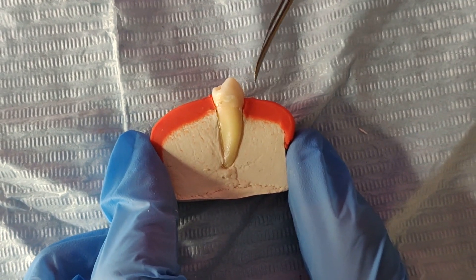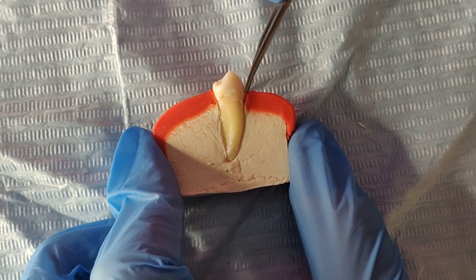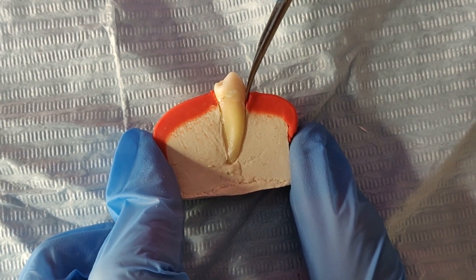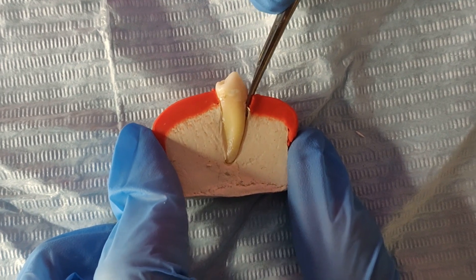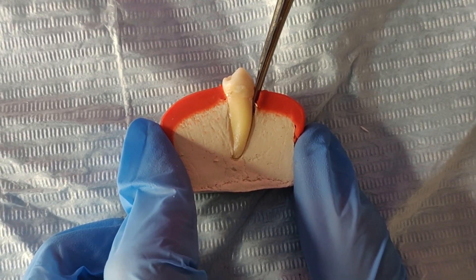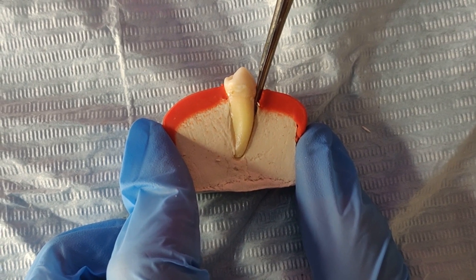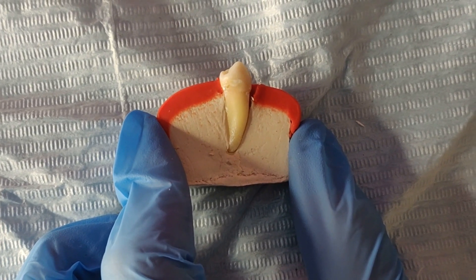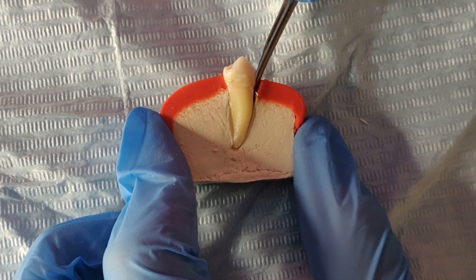The wedge principle is used by positioning a straight elevator tip between the tooth and the alveolar bone and applying slow and constant apical pressure to tear the periodontal ligament attachment from the bone and luxating the root or the tooth.